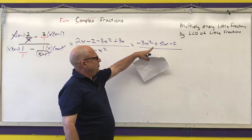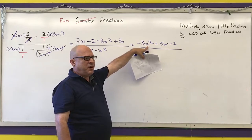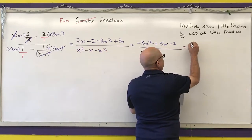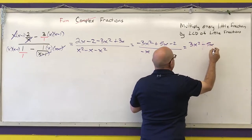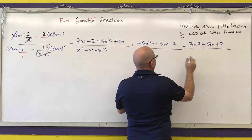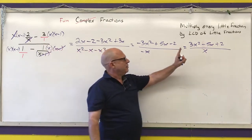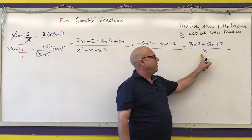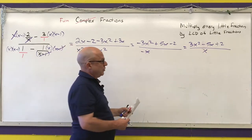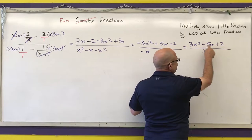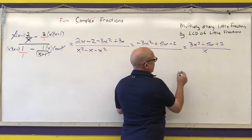I'm going to get rid of the negative by changing all the signs in the numerator and denominator, which leaves me with 3x squared minus 5x plus 2 over a positive x. Now I need to see if I can factor the numerator. I need two numbers that multiply to 6 and add to negative 5 — that would be negative 2 and negative 3, so I'll factor the top by grouping.